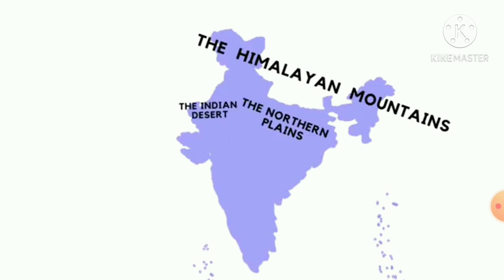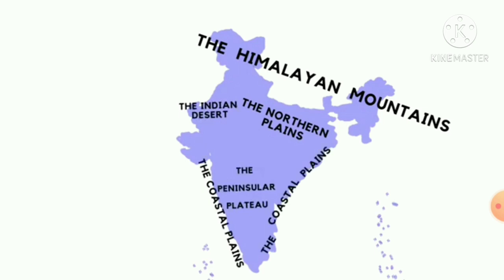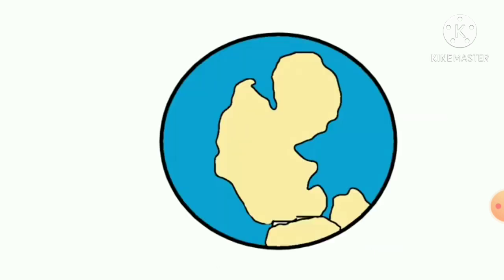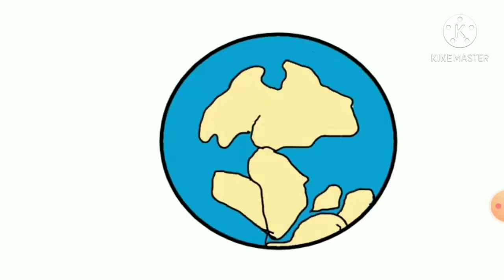The six physical divisions are: number one, the Himalayan Mountains; number two, the Northern Plains; number three, the Indian Desert; number four, the Peninsular Plateau; number five, the Coastal Plains; and number six, the Islands.